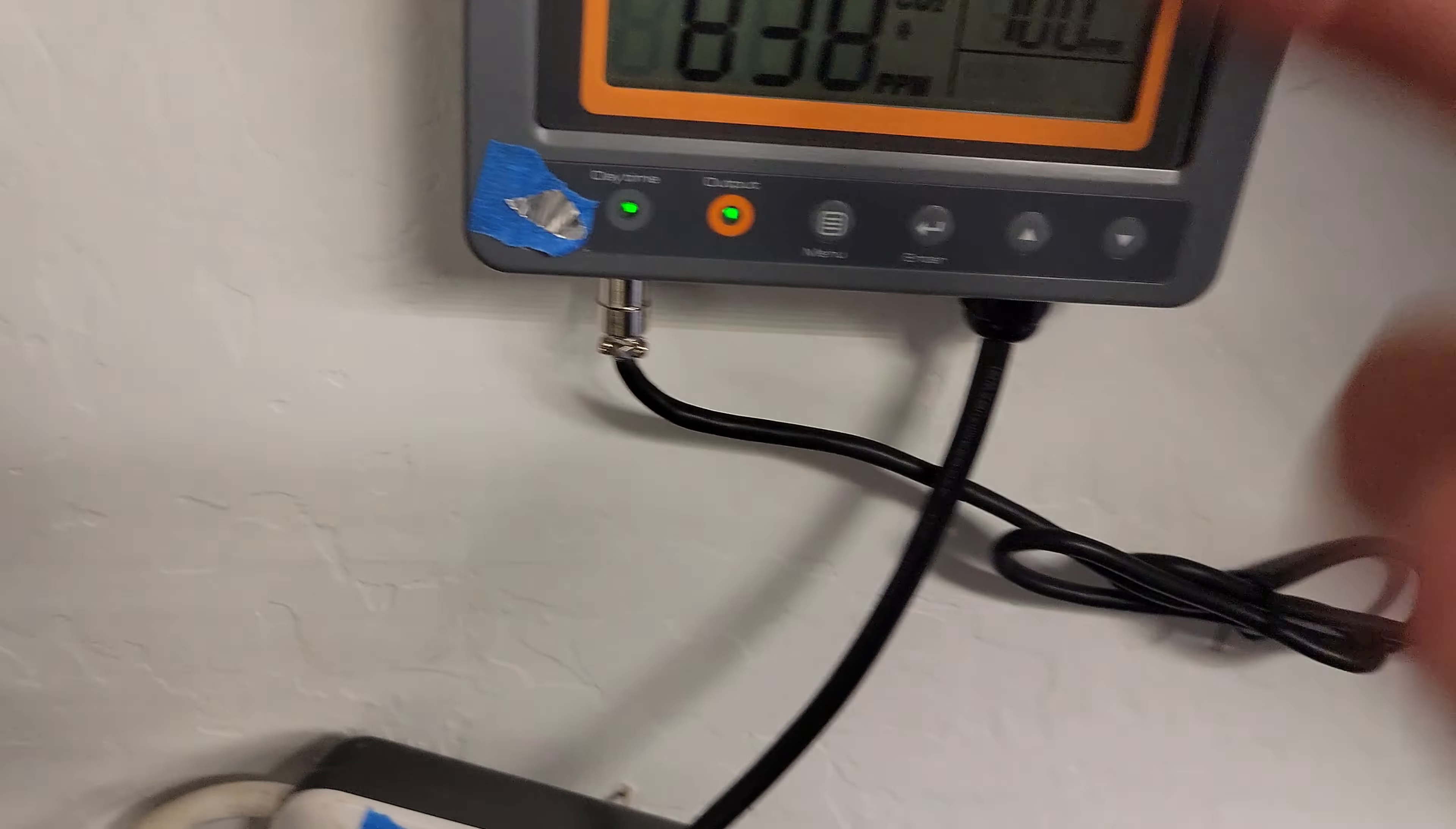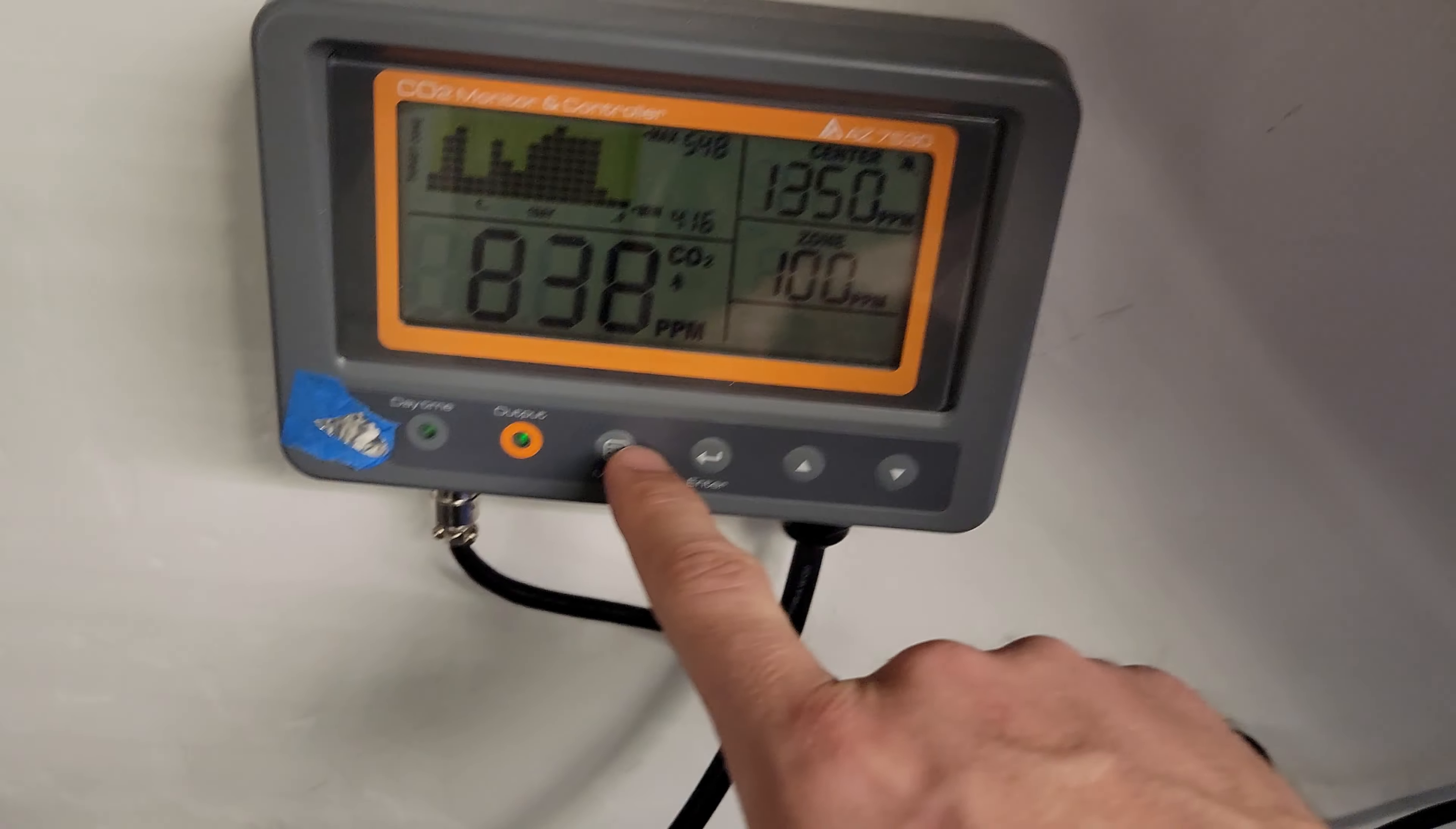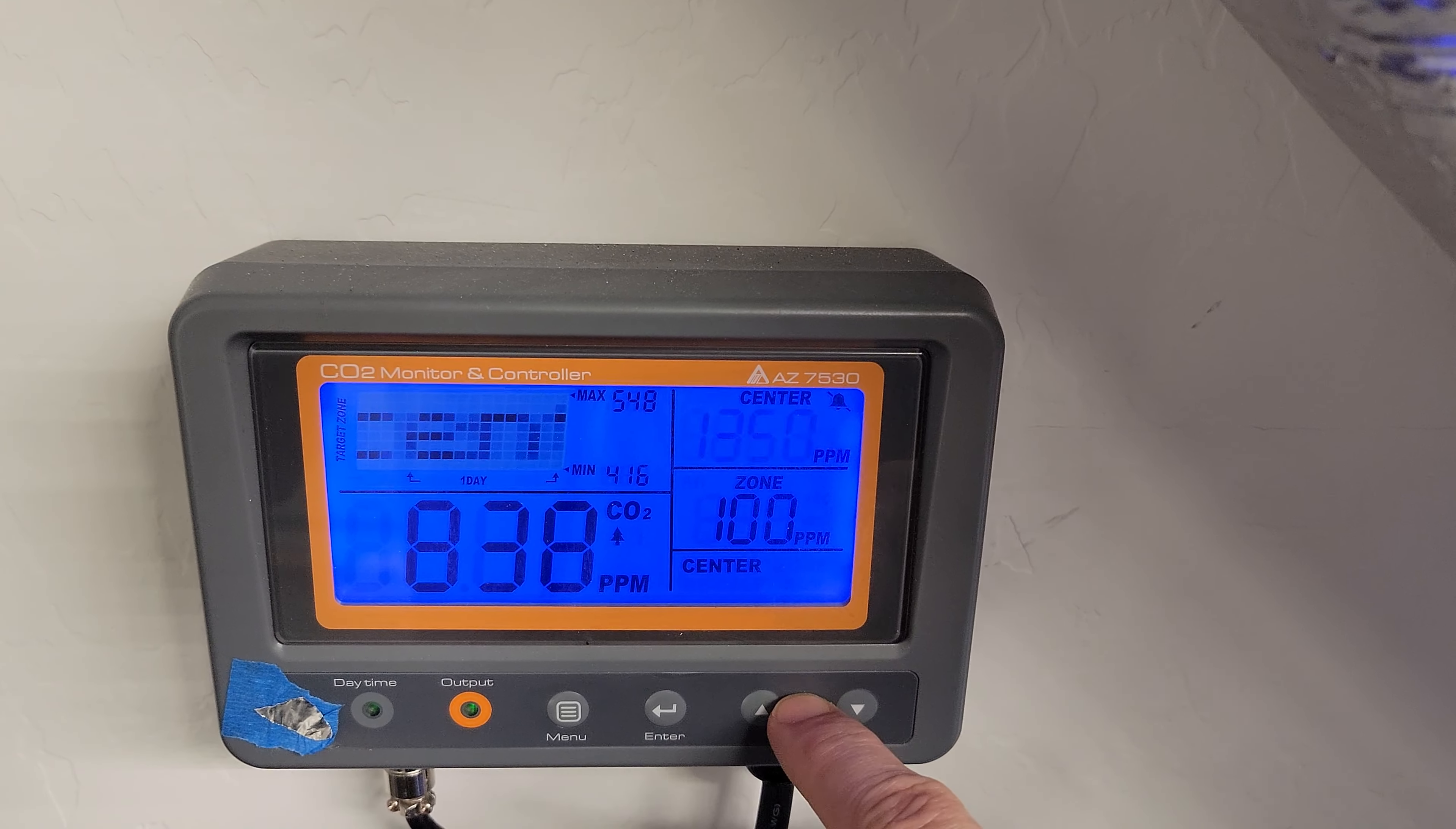When you're setting this up, if you've never used one before, this particular brand was $160 on Amazon. You can pay like $500 for these sometimes, but pretty simple. You literally just hit menu—center is right there—so I would hit OK, go to center/enter, and now I can choose in increments of 50 where I want my PPMs to be at.